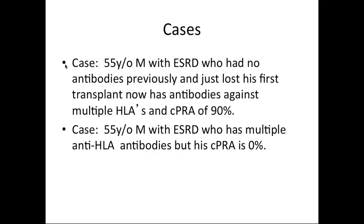A few cases to highlight issues: a 55-year-old male on dialysis, no antibodies previously, lost his first transplant. Now his PRA shows 90% antibodies. Though the antigens he's seen from one donor would be at most two for HLA-A, two for B, two for DRB — so how does he have antibodies against 90% of the community from exposure to just one person? On the flip side, someone could have multiple anti-HLA antibodies but a CPRA of 0%. These paradoxes get to the anatomy of HLA antibodies and epitopes.